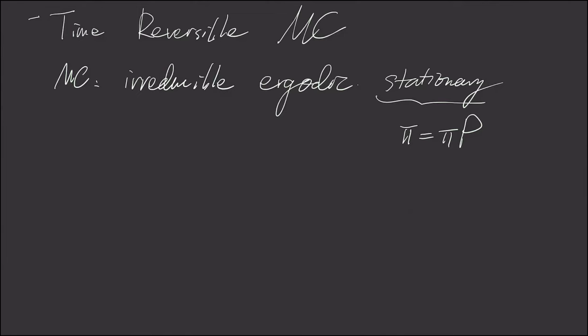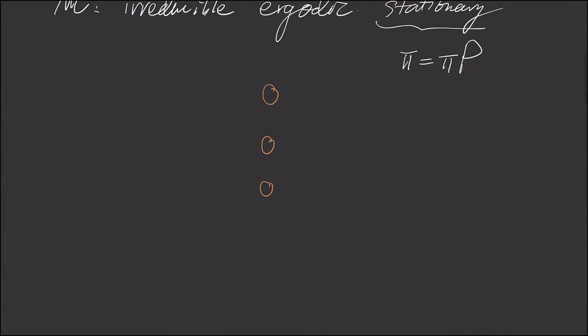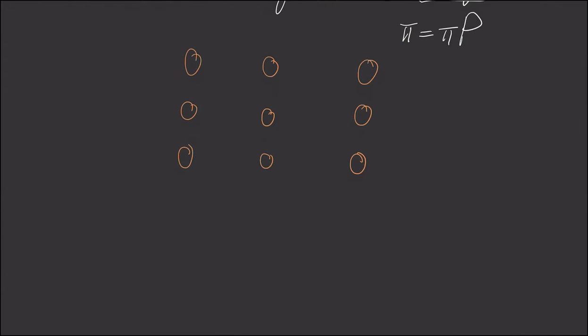So if we think about this, I'm drawing some state space. Suppose we have a state space. I'm drawing this as a random walk instead of a traditional transition diagram.